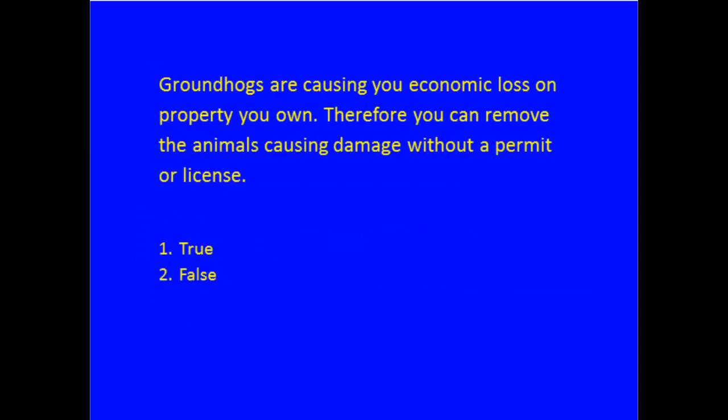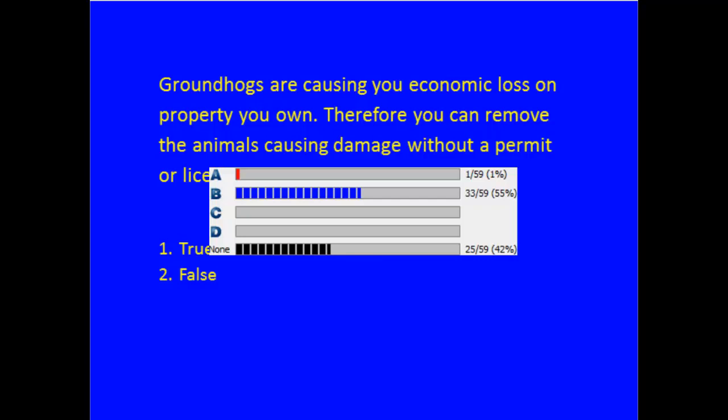Next question: groundhogs are causing you economic loss on property you own — therefore you can remove the animal causing damage without a permit or license. True or false? The answer is false — you do need a license. Even if you're just going to trap and move that animal, you need a permit. Your permit requires you to ask permission before you release that animal on someone's property, and you cannot release it on public property, which is what a lot of people want to do.